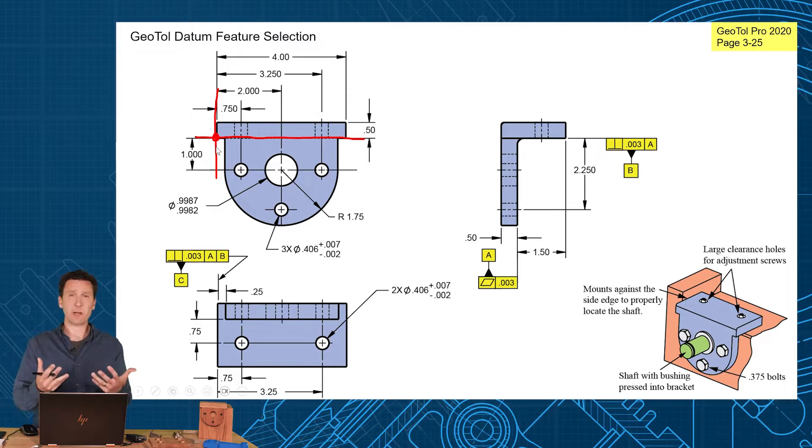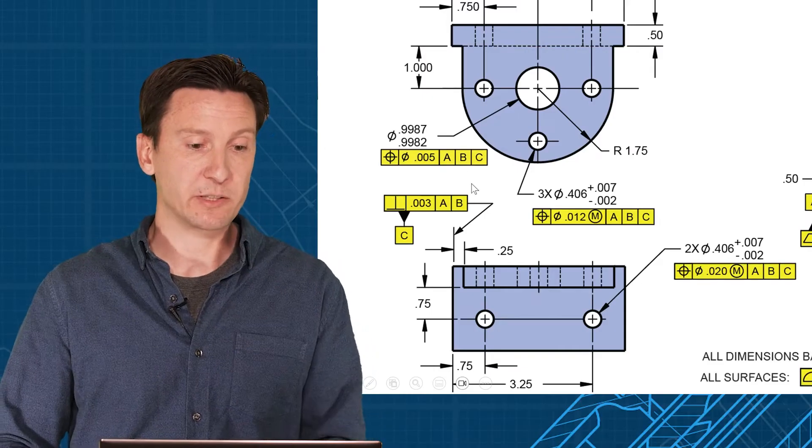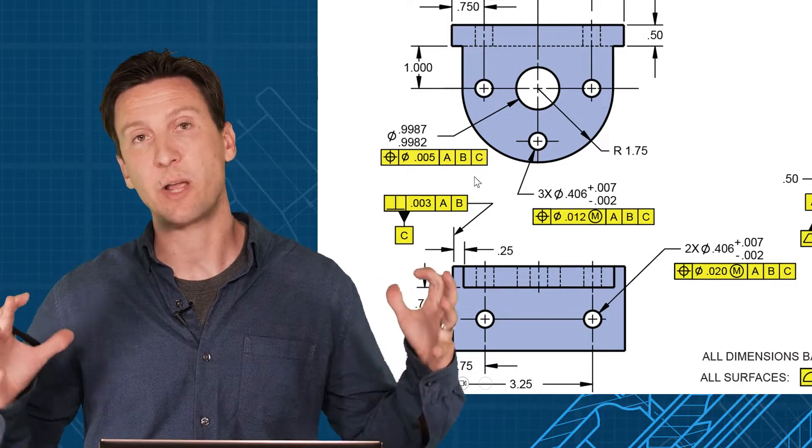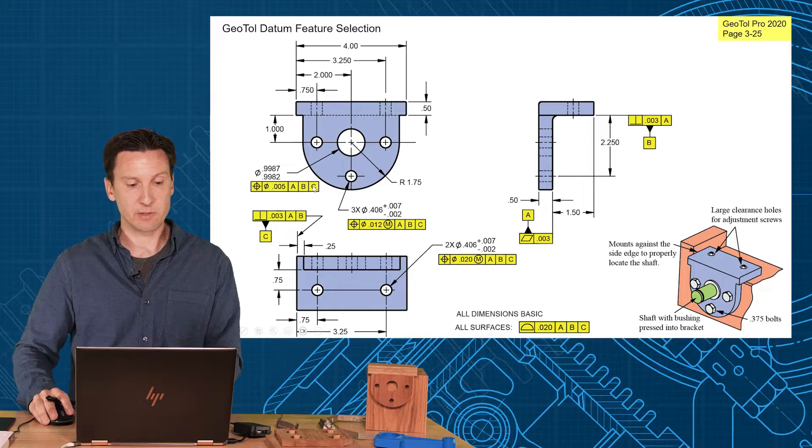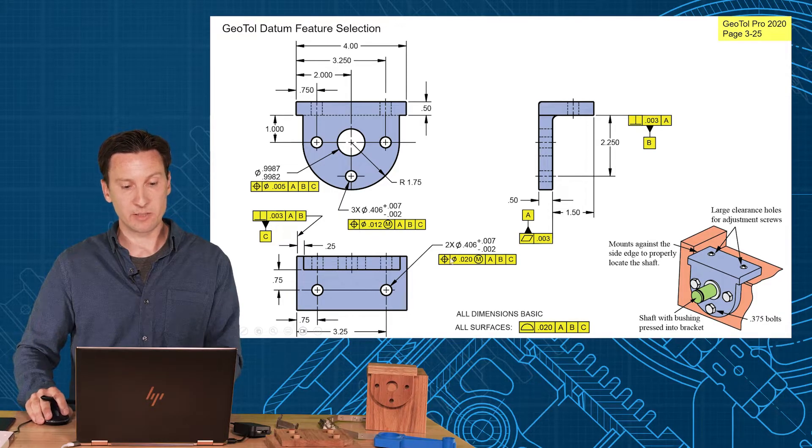That's where we want all of our basic dimensions and tolerances to be related to. So look how 750, 2 inches, 3.25, 4 inches all coming off of that datum reference frame coordinate system. So then we'll apply our two big symbols, position and profile, to locate all of our features to that datum reference frame. We position our holes to A, B, and C.